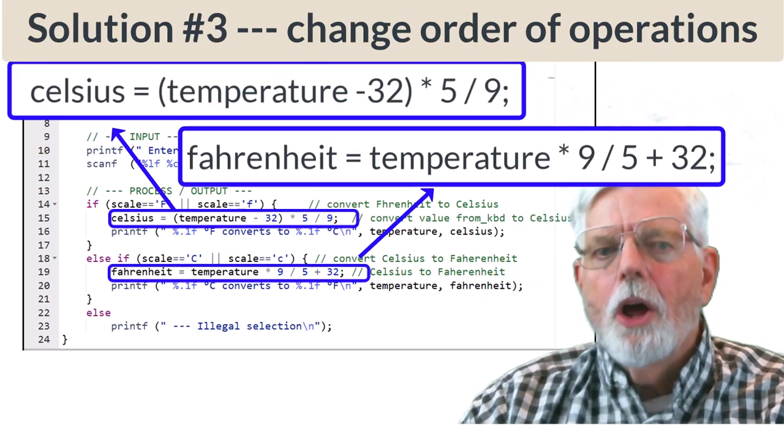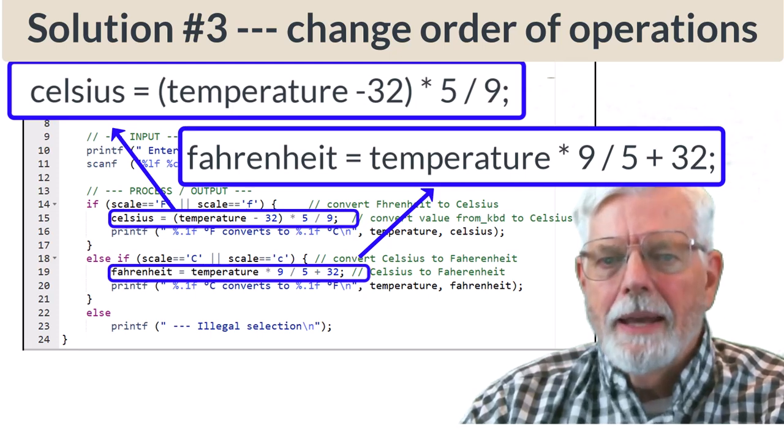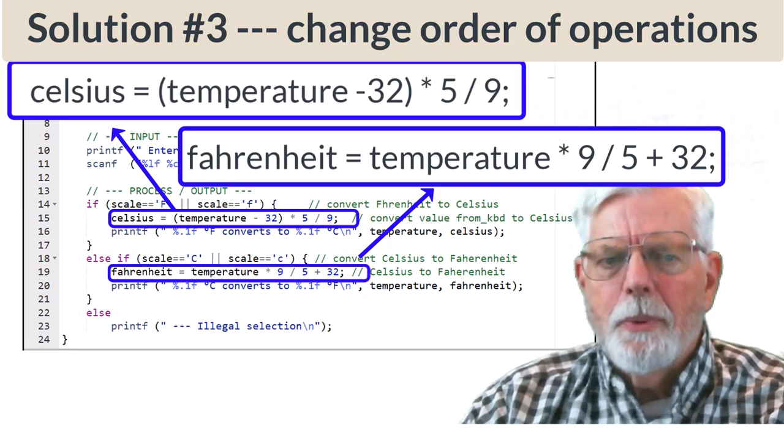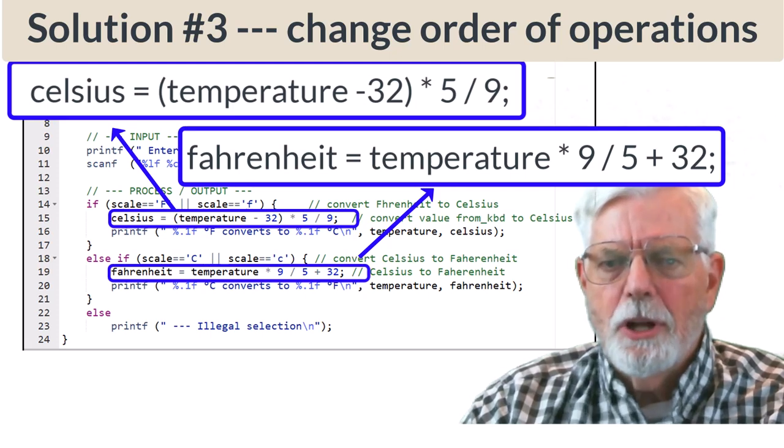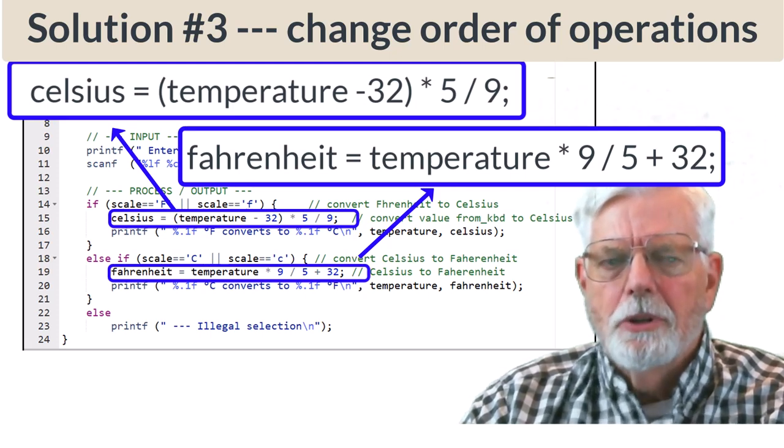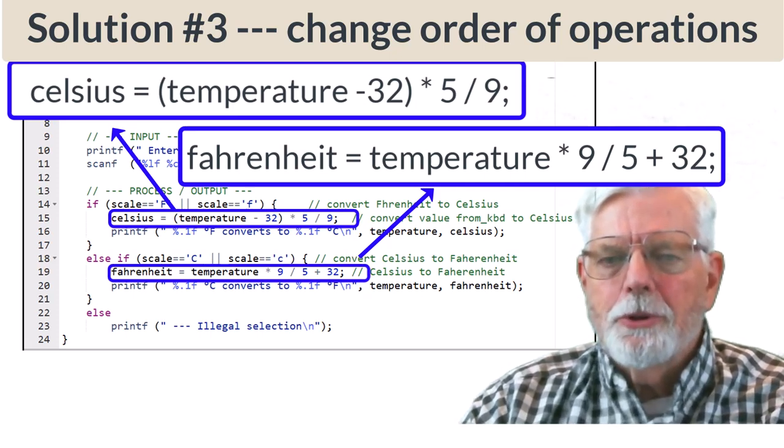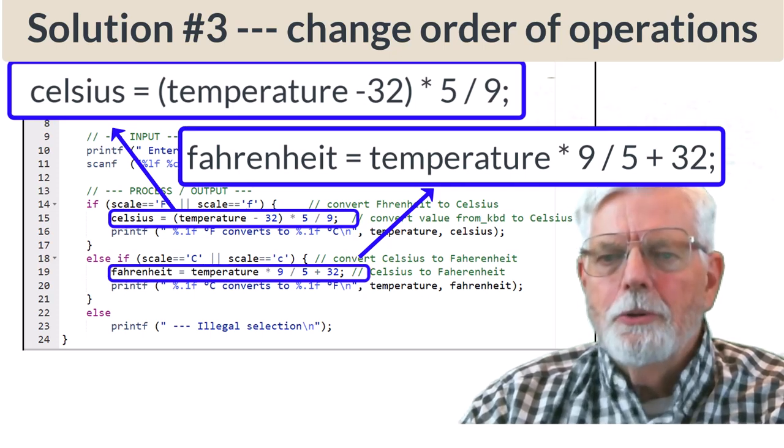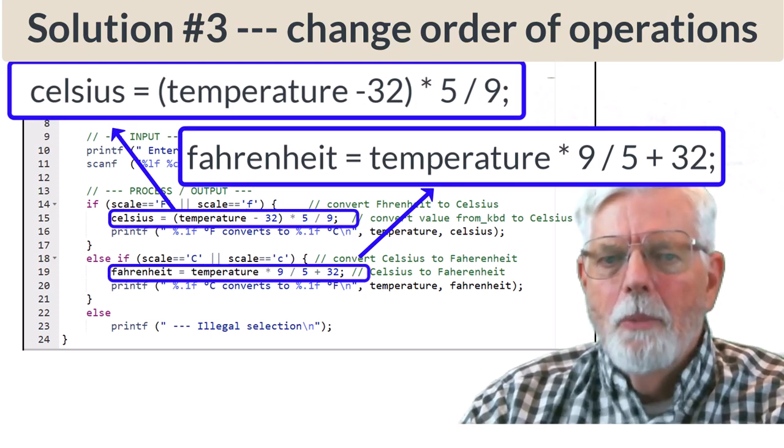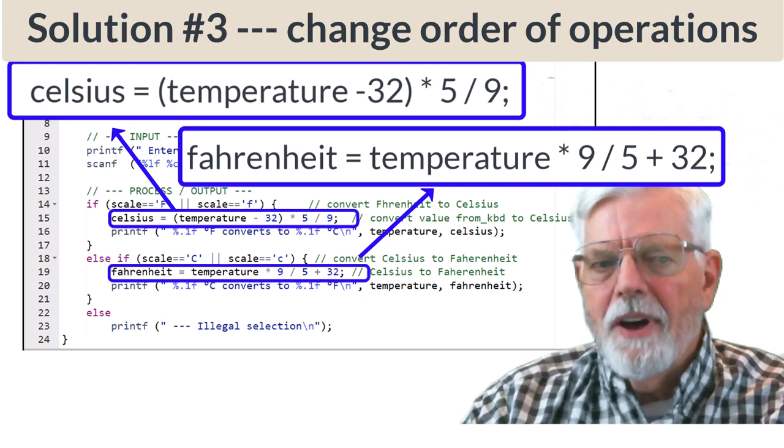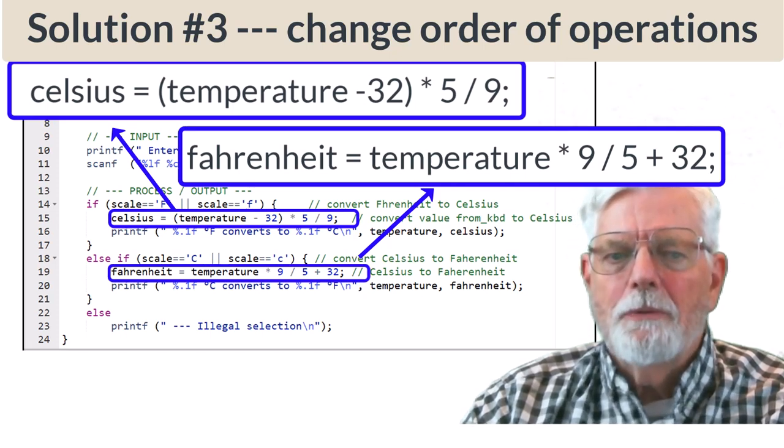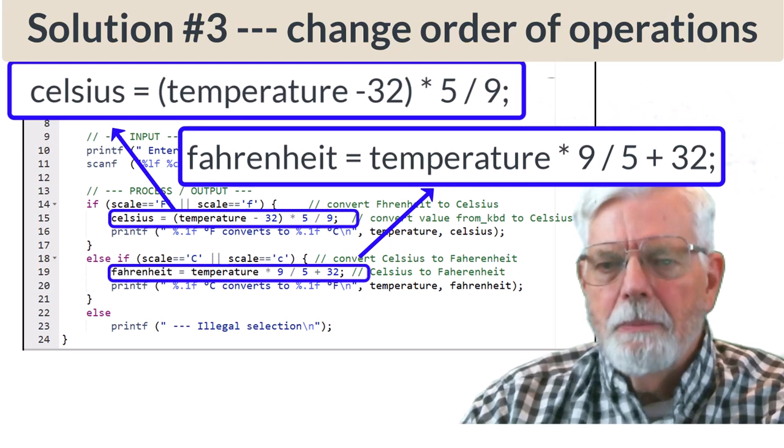A third solution is to place the 5 divided by 9 after the part of the expression evaluation that contains a double such as the temperature. Celsius equals open parenthesis, temperature minus 32, close parenthesis, times 5 divided by 9, semicolon. Because the variable temperature is a double, the 32 is promoted to a double and while moving from left to right we have the double before the 5 so it gets promoted from integer to double and the same for the 9.